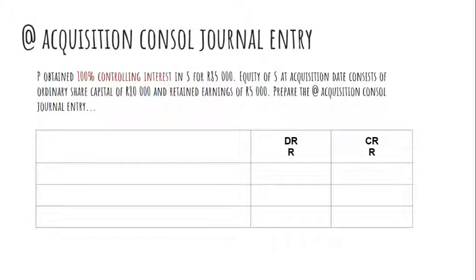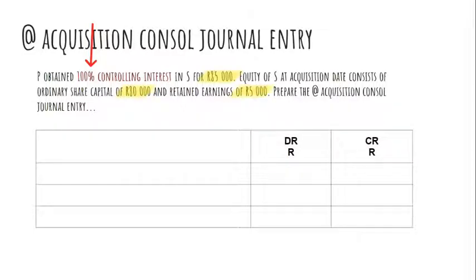I have a scenario where P, the parent, obtained a 100% controlling interest in S and paid R85,000. The cost of the investment is R85,000 paid by the parent. The equity of S at acquisition date consists of ordinary share capital of R80,000 and retained earnings of R5,000. Let's do the at acquisition consolidation journal entry. Immediately you can see it's a wholly owned subsidiary, so I do not expect any non-controlling interests.